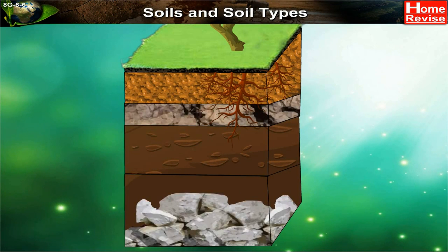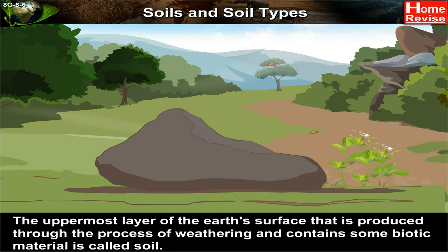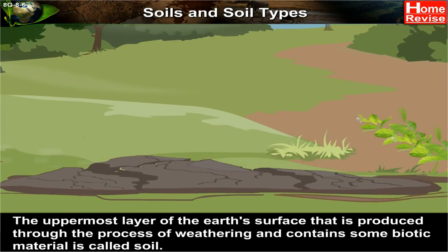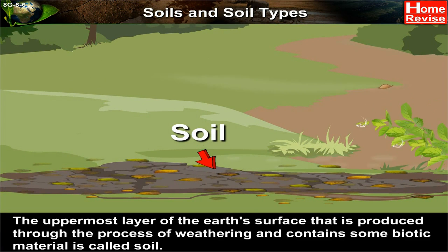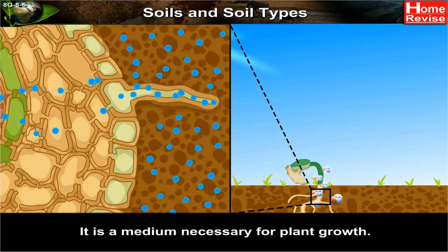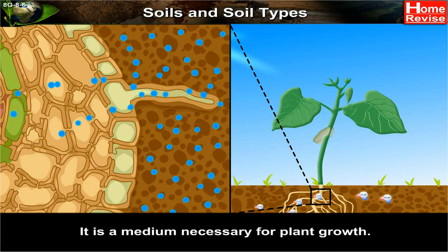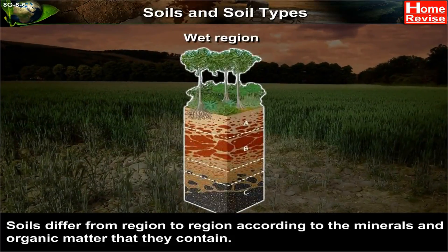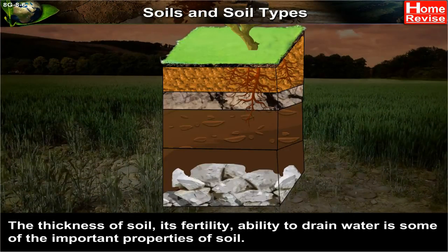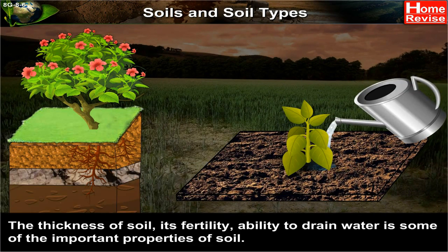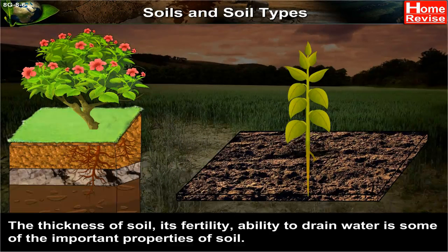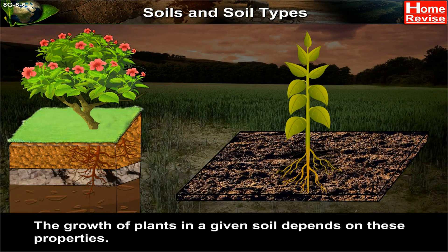Soils and soil types: the uppermost layer of the earth's surface that is produced through the process of weathering and contains some biotic material is called soil. Soil is one of the important natural resources; it is a medium necessary for plant growth. Soils differ from region to region according to the minerals and organic matter they contain. The thickness of soil, its fertility, and its ability to drain water are some of the important properties of soil. The growth of plants in a given soil depends on these properties.